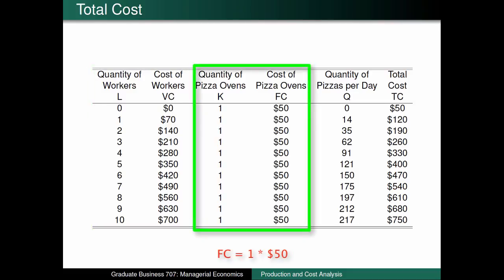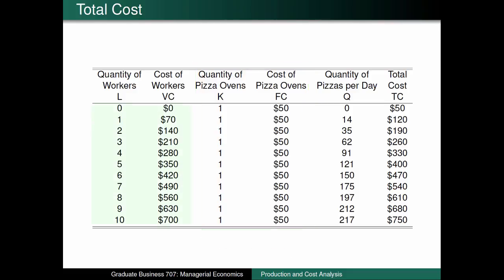Second, the fixed cost is equal to $50 regardless of the amount of pizzas produced because we only have one pizza oven, and as we mentioned in the previous recording, capital is fixed in the short run. Notice that hiring no workers leads Rocket Joe's to not pay any money towards labor, whereas an increase in workers leads to an increase in variable cost. On the other hand, notice that Rocket Joe's must pay $50 regardless of the amount of pizza they produce. Indeed, this is why we refer to the cost of workers as being variable, whereas the cost of capital is fixed.